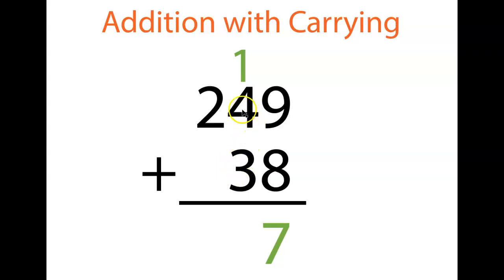Then we're going to do our tens column. Four plus three is seven, plus one is eight. Well, okay, you don't have to carry anything. That's actually kind of nice. Then we're going to go to our hundreds column. All we have in that hundreds column is that two. So what do we put there? Two. So we got 287.